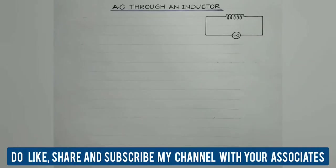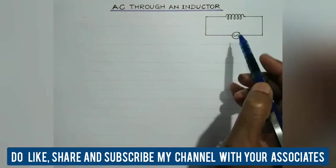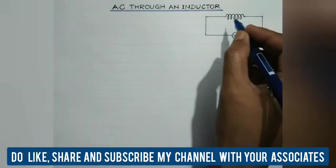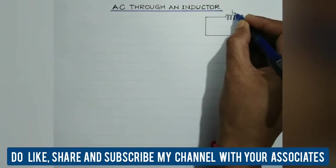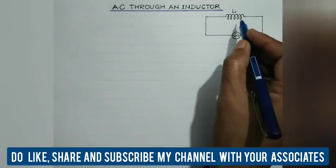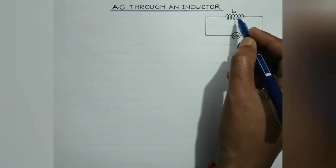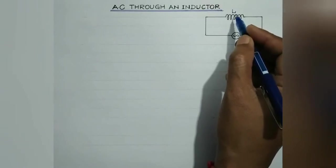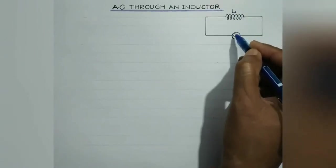We will start this session with the topic of alternating current through an inductor — that is, we are going to consider an AC circuit comprising of a pure inductor. Suppose this is a pure inductor of self-inductance L, meaning it has no ohmic resistance. Its inductance is L and it is connected to a source of alternating EMF.